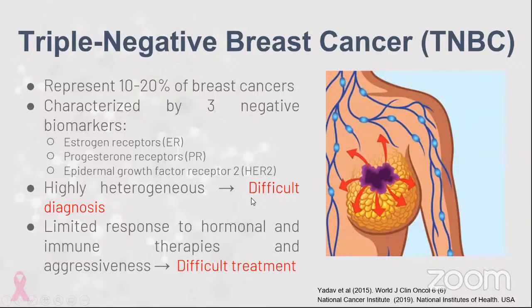As a result, hormonal and immune therapies are not very effective, and it is commonly an aggressive type of disease, so treatment is difficult and early diagnosis is important in order to have a positive outcome.